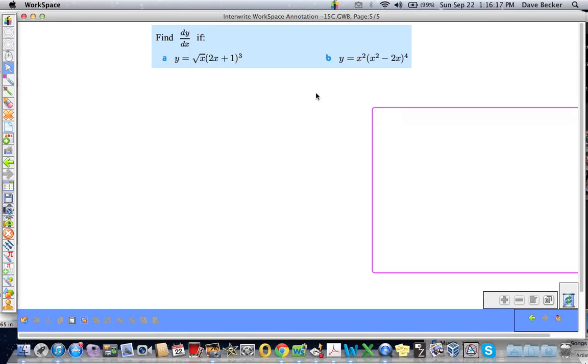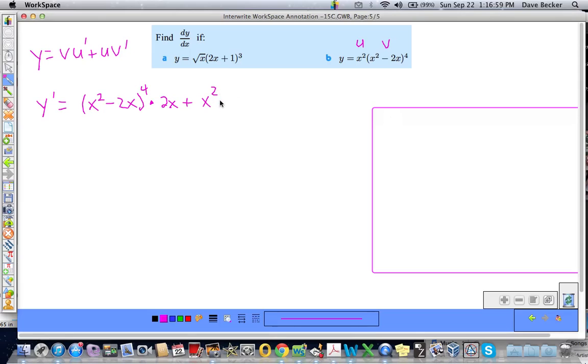We'll do the last example, this one. Again, y equals v du plus u dv. And what's my u? My u is x squared and my v is x squared minus 2x to the fourth power. So, y prime is going to be equal to v, the function v. So, I just rewrite it. x squared minus 2x to the fourth, multiplied by du, the derivative of u. The derivative of x squared is 2x plus u. The function u is x squared, multiplied by the derivative of v, u dv. Again, we have some chain rule actions. So, that's going to be times 4 times x squared minus 2x to the third power. Then, multiplied by the derivative of the inside. So, that would be derivative of x squared minus 2x is 2x minus 2. Done.